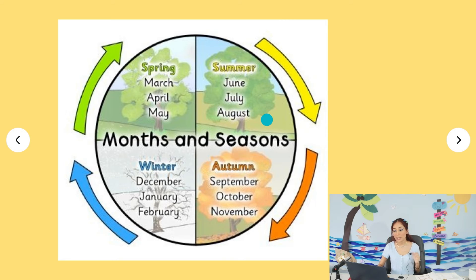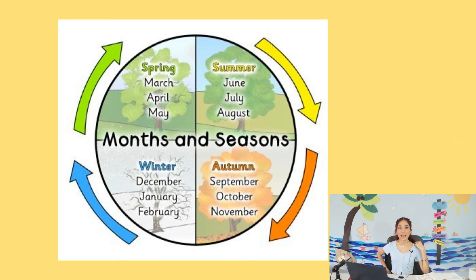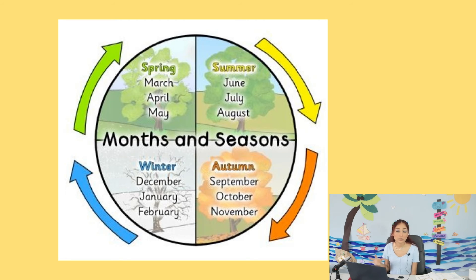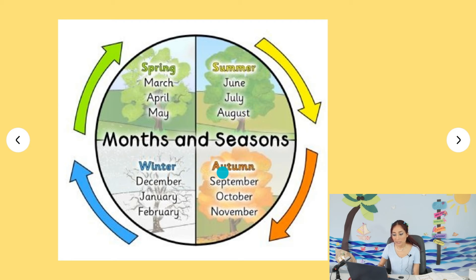Then we have autumn, sometimes called fall, in September, October, and November. Autumn is when the plants and animals need to get ready for the winter coming next. The leaves from the trees start to fall and animals need to get safe because the cold is really coming. So: winter — December, January, February; spring — March, April, May; summer — June, July, August; autumn — September, October, November.